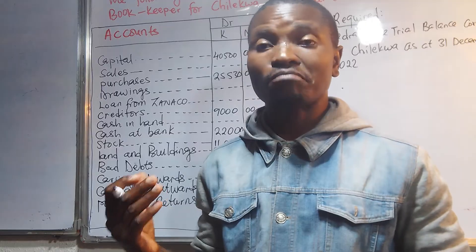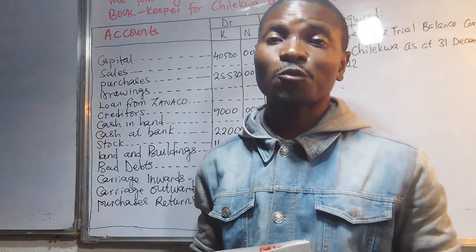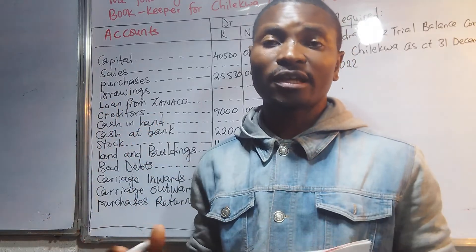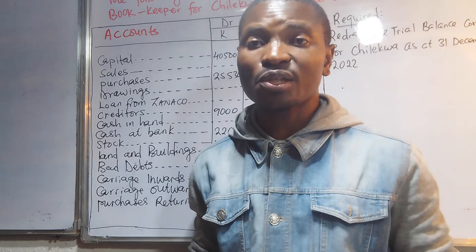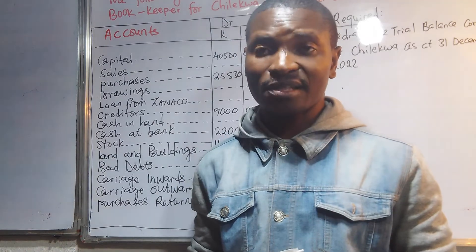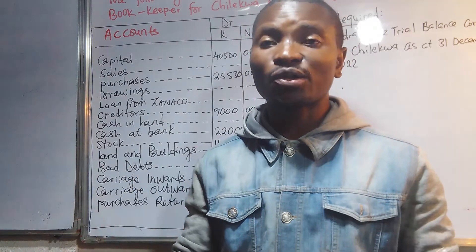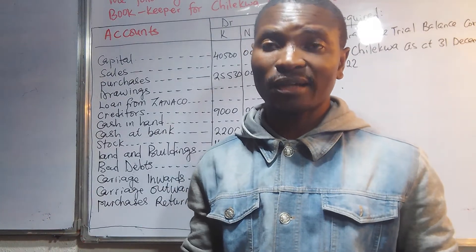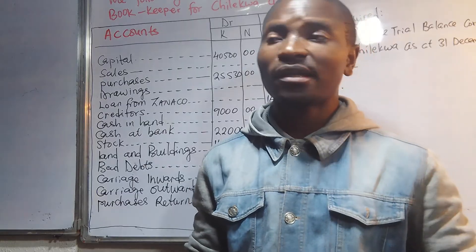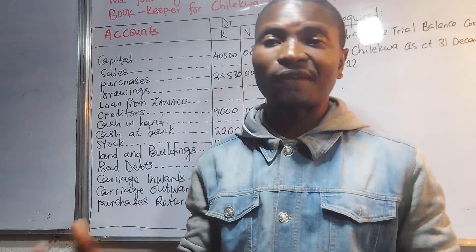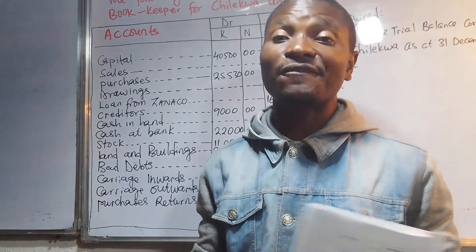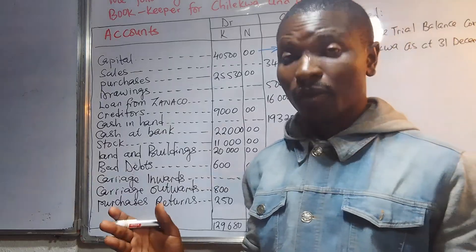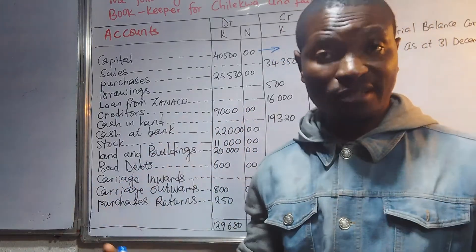Most of the resources we start with in a business are borrowed from various sources — we can get a loan, borrow from family, a friend, or a financial lending institution. So capital should go to the credit side of the trial balance.